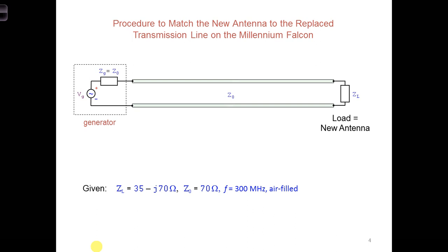Earlier, we mentioned that the Millennium Falcon antenna has an impedance of ZL here at 35 minus j70, and the new transmission line has an impedance of 70 ohms.